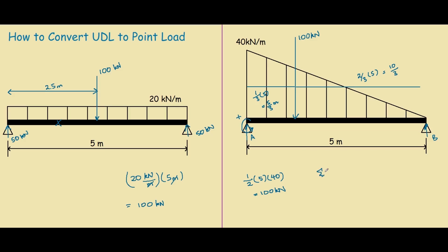We have sum of moments equals zero for counterclockwise positive. So we have minus 100 times 5/3 for our first moment, plus B times five, and that would equal to zero. If you work out B, it equals to 33.33 kN.